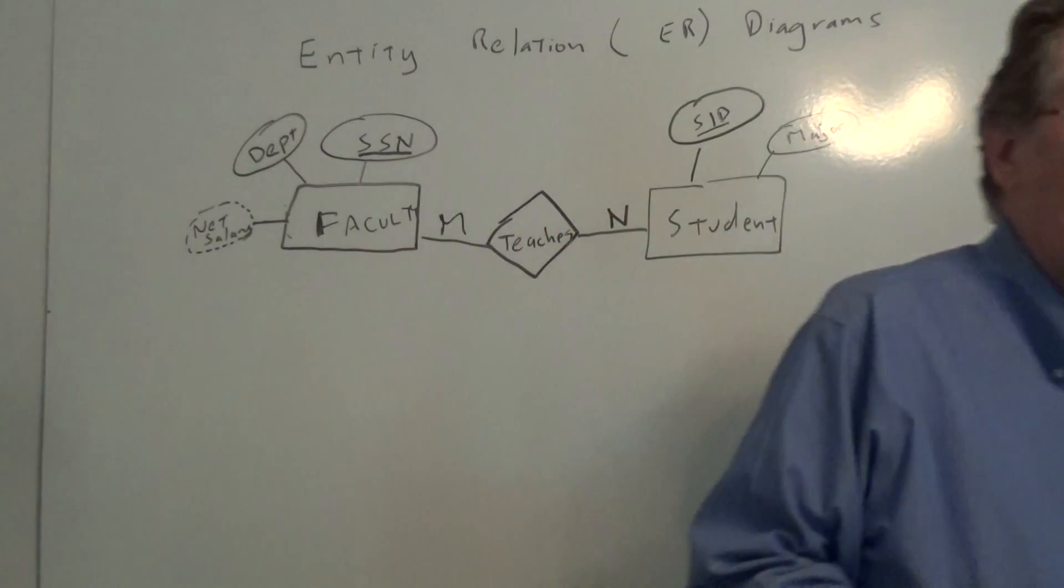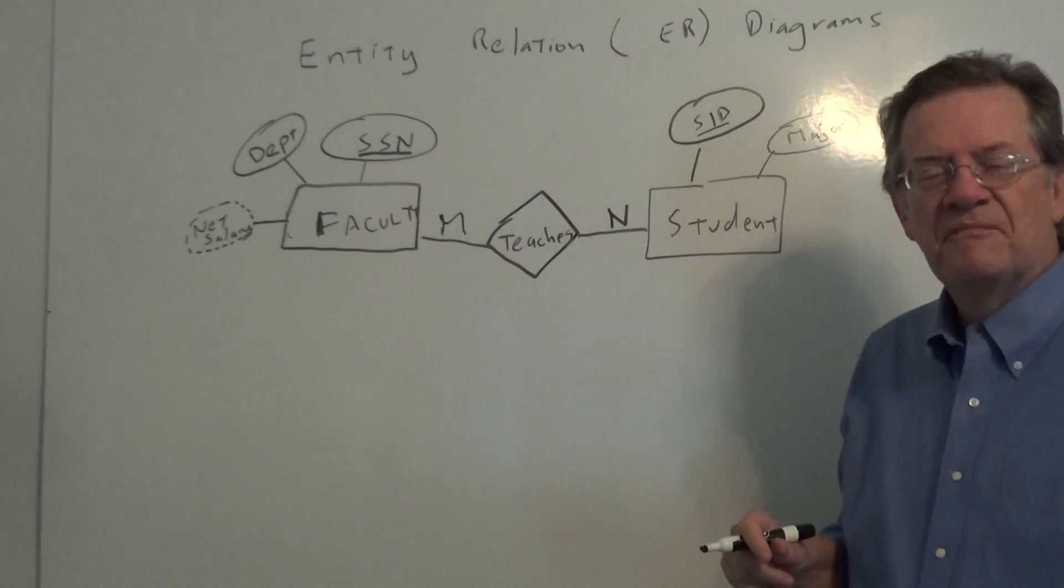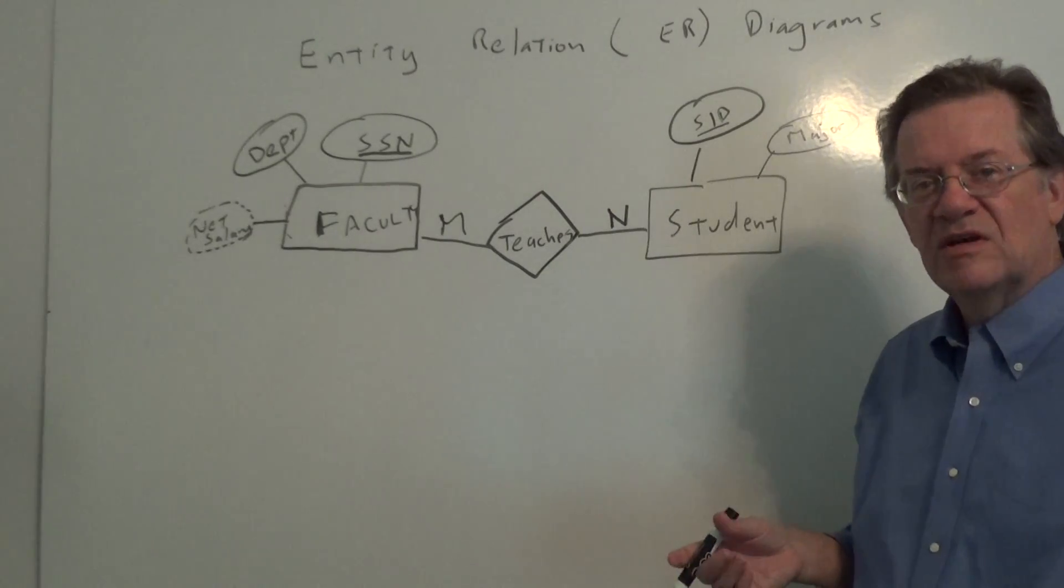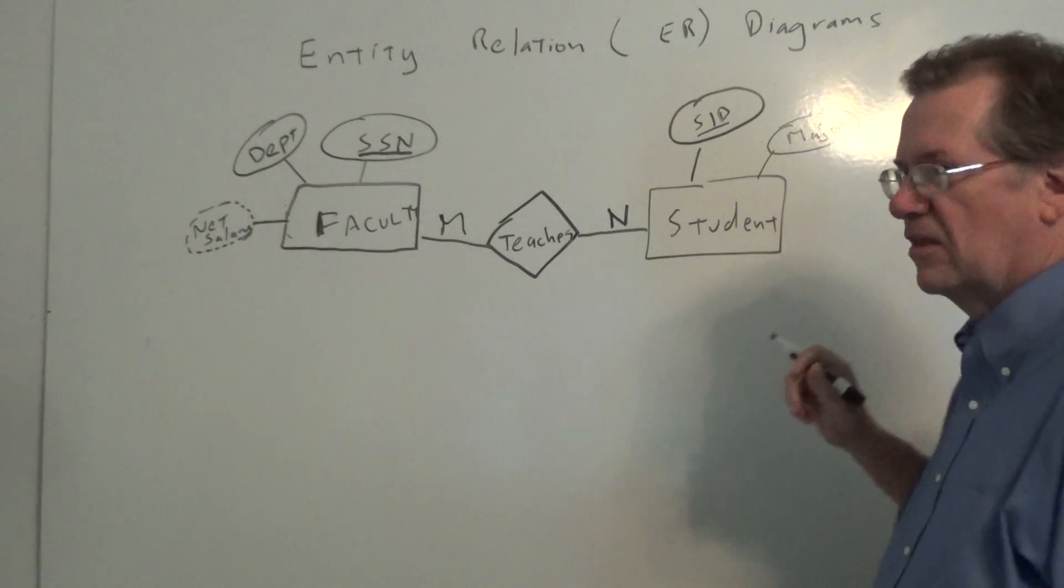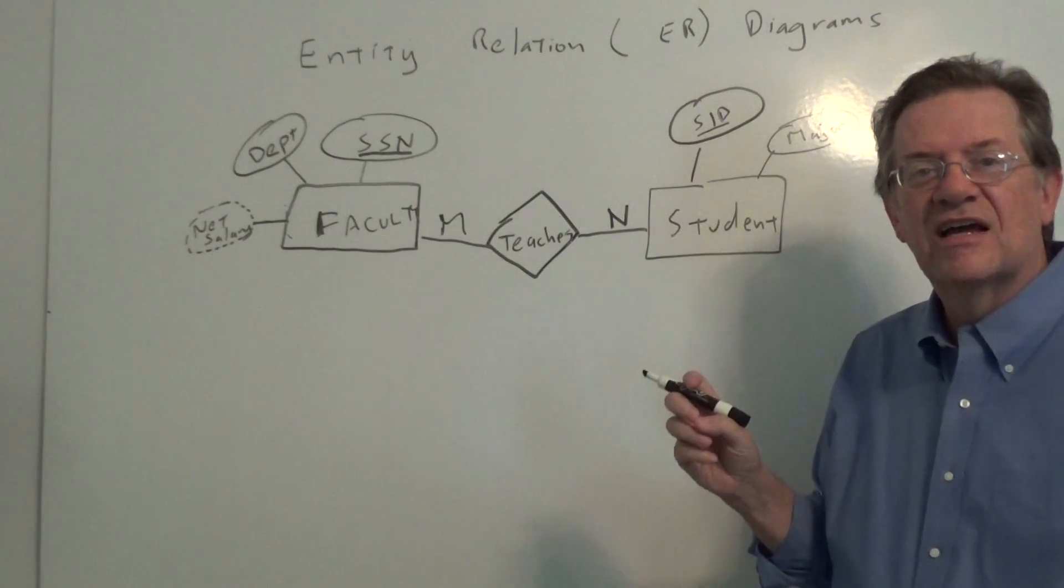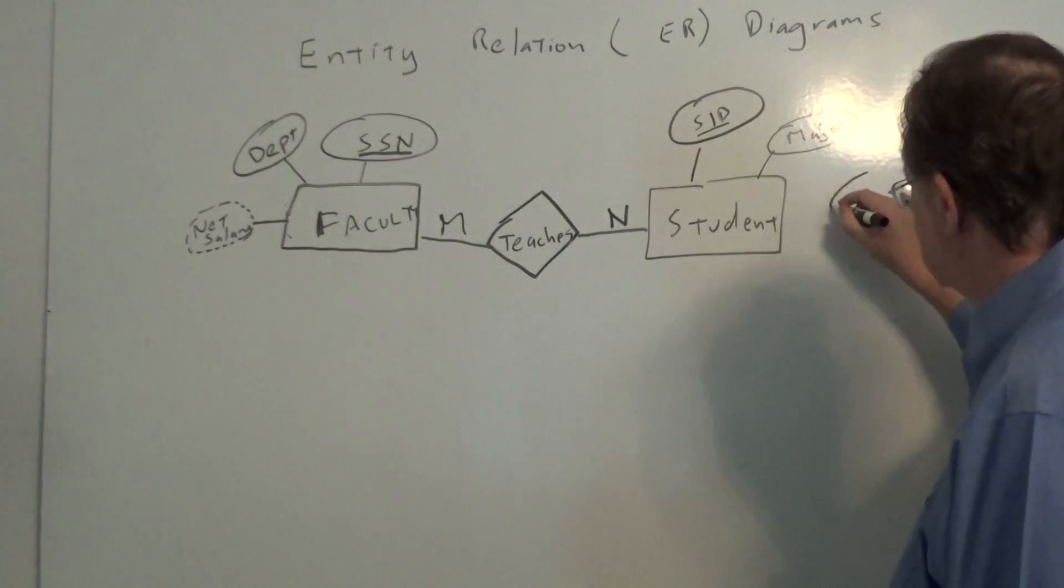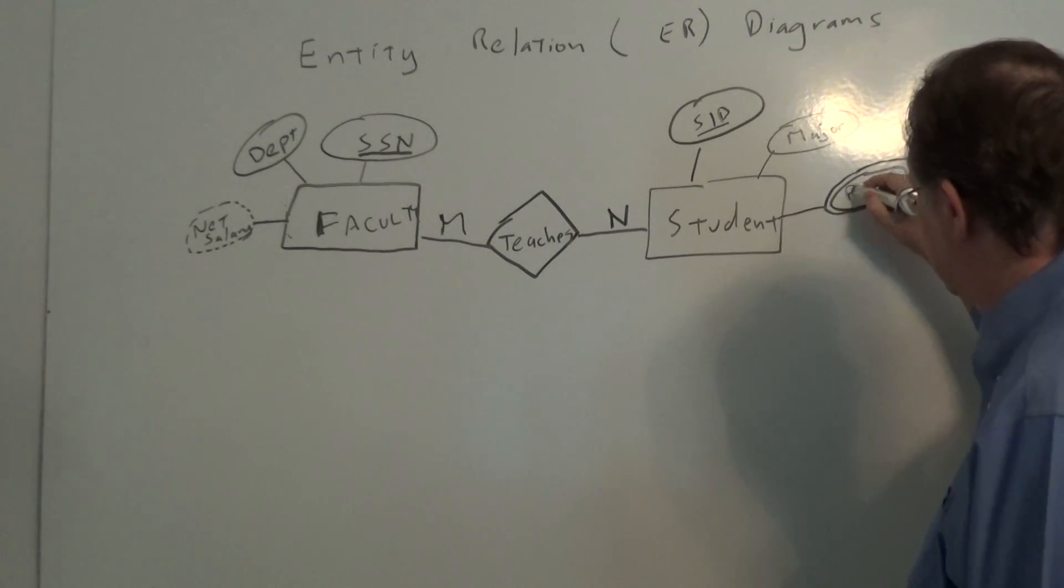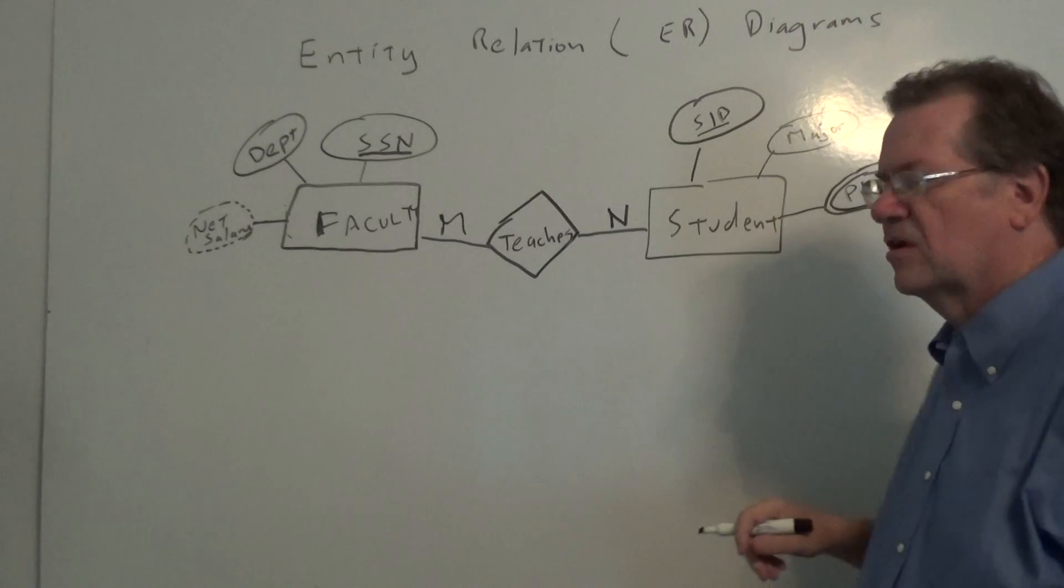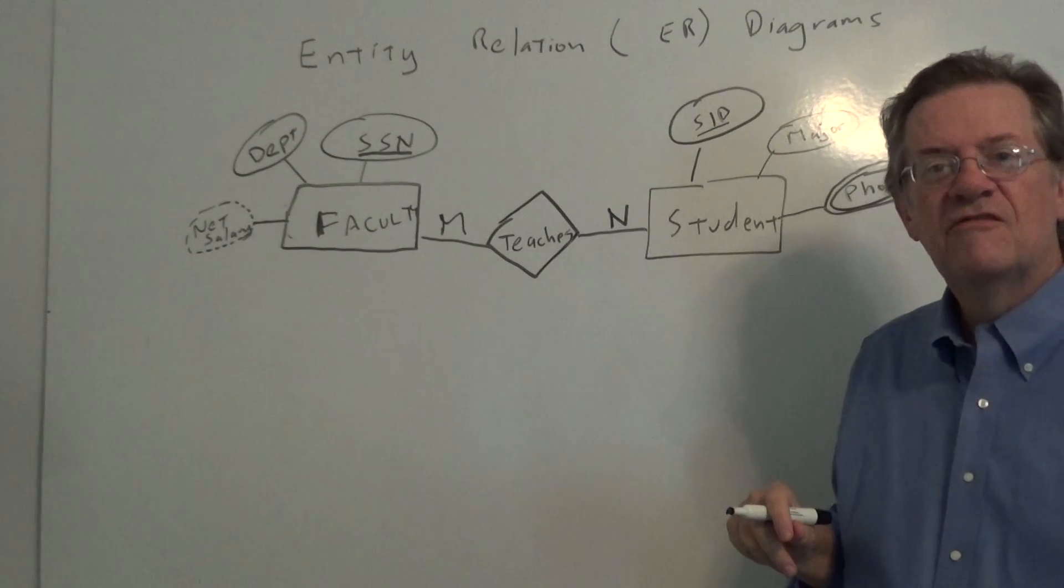Now to show you another feature of entity relation diagrams, suppose a student, very popular student, has quite a few phone numbers. A cell phone, home phone, work phone, and so forth. Well, that's an example of what's called a multi-valued attribute. And to show a multi-valued attribute, we use a circle or a double-line circle like this. With the word phone in it. And in this particular case, what that means is the student has more than one phone number.